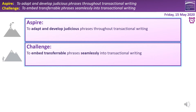We're also going to aspire to adapt and develop judicious phrases throughout transactional writing. Judicious means well-judged — it means we've thought really carefully about the best phrase. Not just 'I need a phrase here,' but 'this is the best phrase to use at this particular time.' And also not just to embed them, but to adapt them, change them, extend them, move them around so that they're ours and that they make sense.